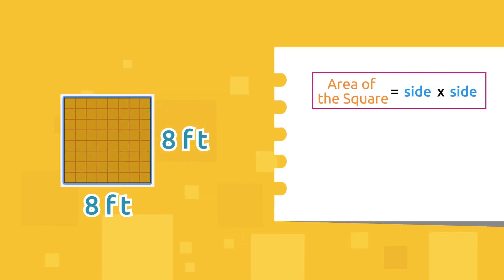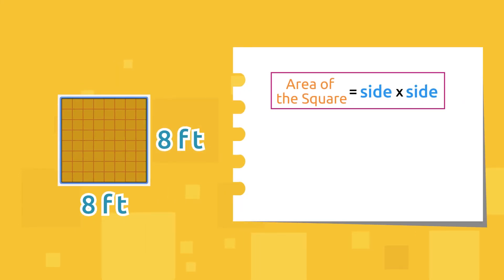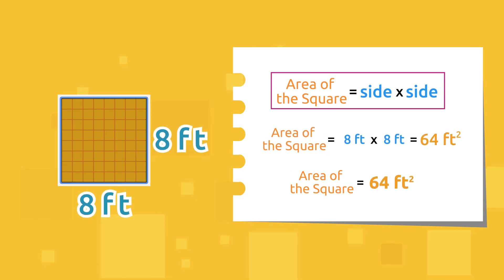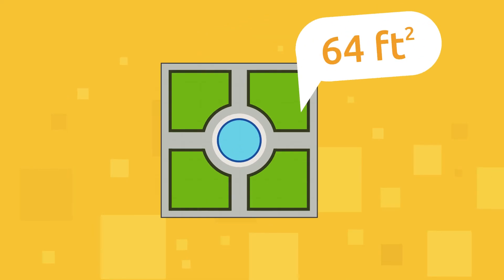We're going to multiply one side by the other, meaning eight by eight, which equals... come on, tell me! That's right, eight times eight is 64. The garden will have a surface area of 64 square feet.